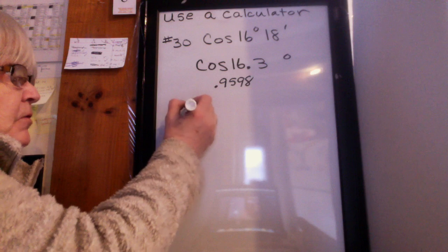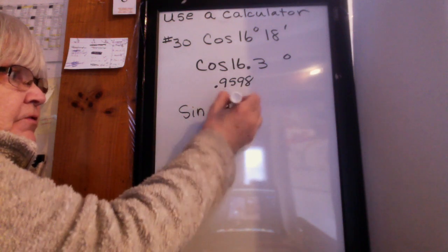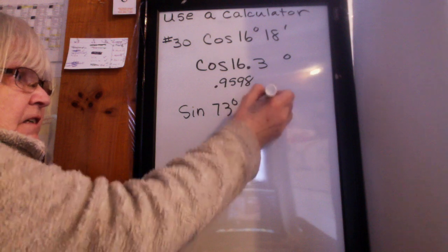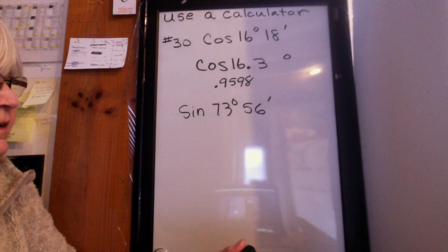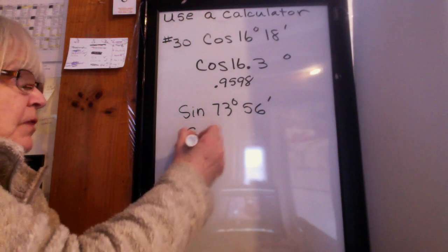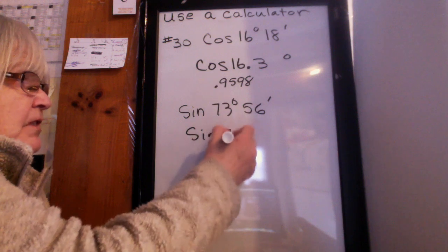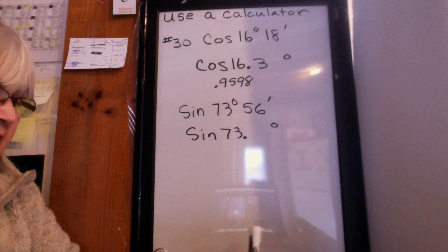Let's try another one. Suppose I want to do the sine of 73 degrees 56 minutes. What's the first thing I'm going to do? Change that to a decimal. So I'm really going to do the sine of 73 point something degrees.